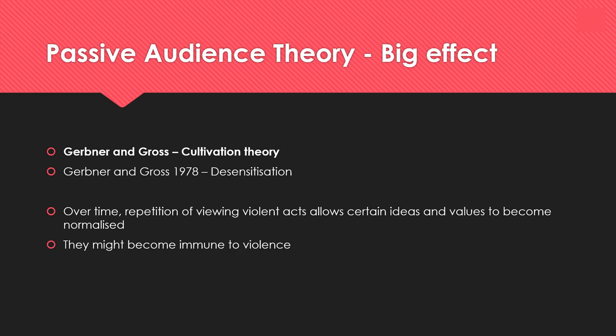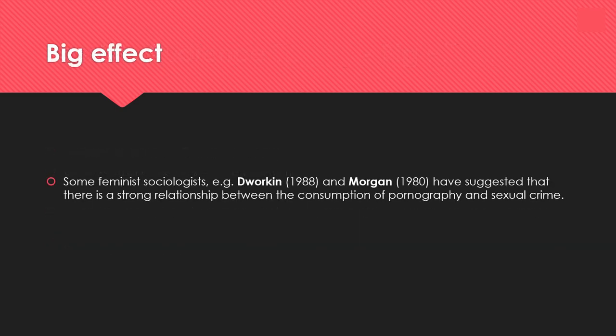Another passive audience theory is cultivation theory by Gerbner and Gross. They argue that people become desensitised over time: repetition of viewing violent acts allows those ideas and values to become normalised, making people immune to violence. Feminist sociologists Dworkin and Morgan also suggested a strong relationship between consumption of pornography and sexual crime, arguing people are susceptible to ideas seen in pornography and re-enact them.